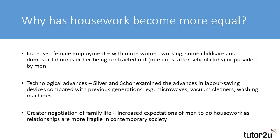A second reason for changes in domestic labour is technological advances. Silver and Shaw suggested that some labour-saving devices such as washing machines and vacuum cleaners had reduced the workload of women. Since the publication of their research, technology has provided even greater labour-saving devices with dishwashers, microwave ovens and even remote vacuum cleaners reducing the amount of household labour that women perform. It has to be noted, however, that we are talking about a reduction in housework for women rather than an increase in male work.